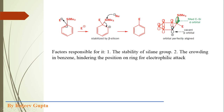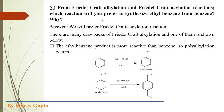Some questions I have discussed in a previous lecture. Now, the question is from Friedel-Crafts reaction — from Friedel-Crafts alkylation and Friedel-Crafts acylation reactions. Which reaction will you prefer to synthesize ethylbenzene from benzene, and why? Friedel-Crafts aromatic electrophilic substitution reactions are of two types: alkylation and acylation. We have to state which reaction to prefer and why. The answer is that we prefer Friedel-Crafts acylation reaction.